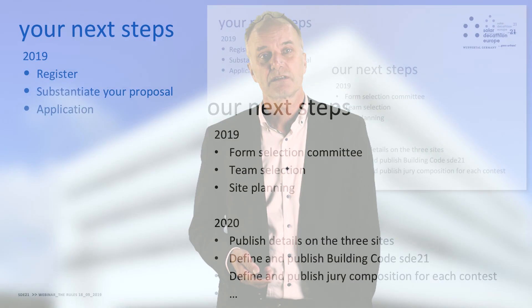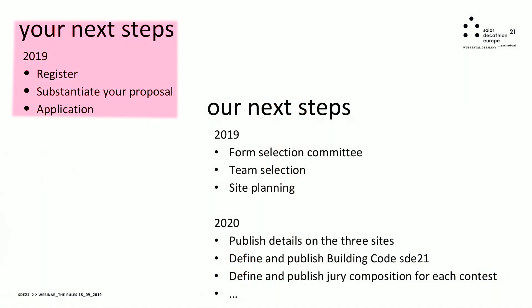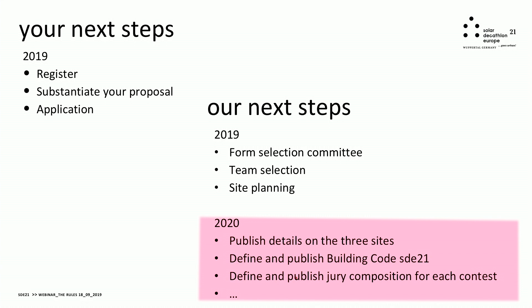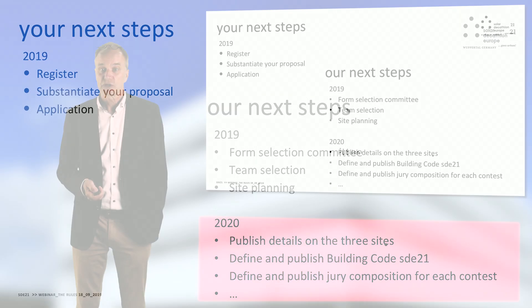What are the next steps? For teams, it is important to register for the competition and substantiate your proposal for the application in October. On our side, we have to form the selection committee for proposals, select the teams, and improve our site planning with more detailing for the building code to deliver early next year. In 2020 we will publish more details for the three sites in Wuppertal, publish the building code for SDA21, and define and publish the jury composition for each contest. Finally, we invite everybody to come to Wuppertal and join us in Solar Decathlon 21. Thank you.